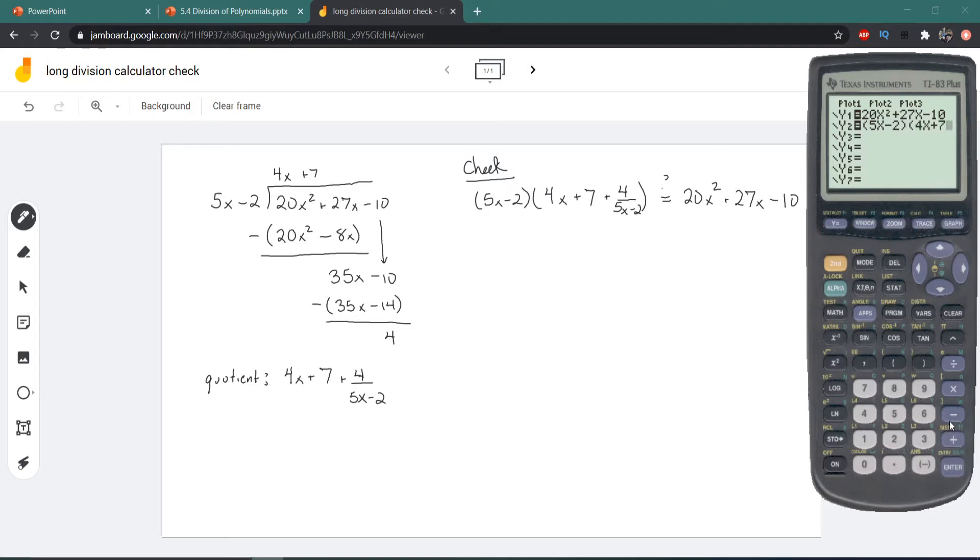plus 7 plus and then we're throwing in more parentheses, 4 over more parentheses 5x minus 2, close the parentheses, close those parentheses again and that should be enough.